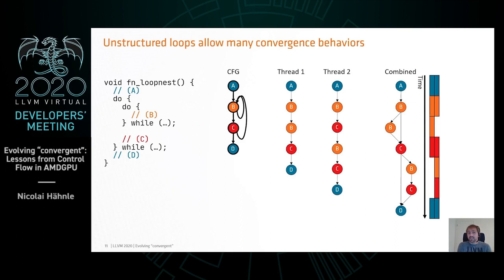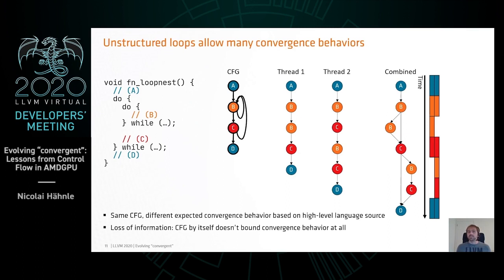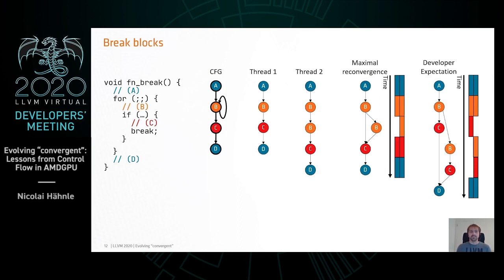Looking at the high-level source, you'd expect more the combination where we iterate through the inner loop until all threads are done with it, and then they execute the C block together. So we have the same CFG but two different expected behaviors — the problem is that we lost information, and we need to do something about that. But before I show how we do that, let's look at some other examples.